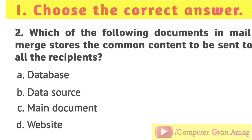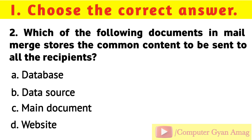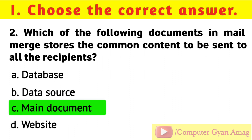Question 2: Which of the following documents in mail merge stores the common content to be sent to all the recipients? Your options are: A) Database, B) Data Source, C) Main Document, D) Website. Correct option is C: Main Document.